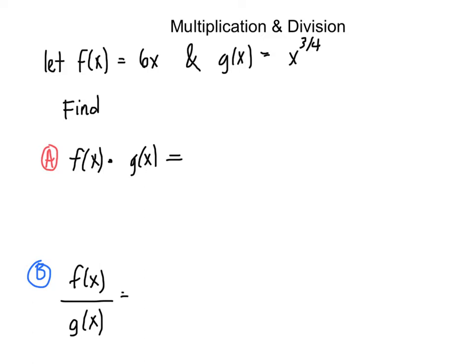So we have f of x equals 6x and g of x equals x to the 3 fourths. So to multiply these together, we do exactly that.